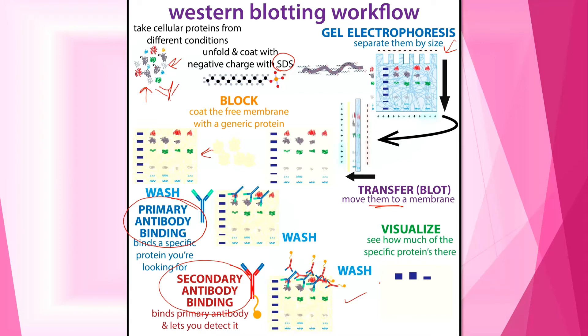If we don't have a primary antibody binding, we won't have a secondary antibody binding either, so we can wash it off. If there is no fluorescence signal, we conclude there is no target protein in that particular sample.